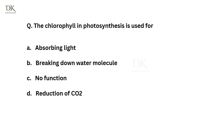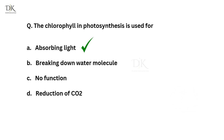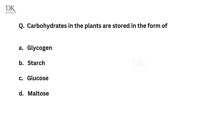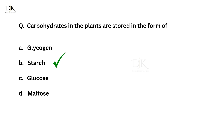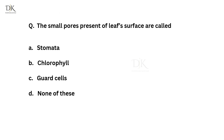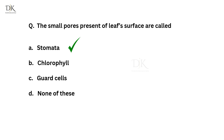The chlorophyll in photosynthesis is used for? The right answer is absorbing light. Carbohydrates in plants are stored in the form of? The right answer is starch. The small pores present on leaf surface are called? The right answer is stomata.